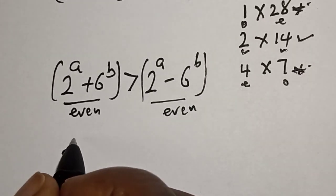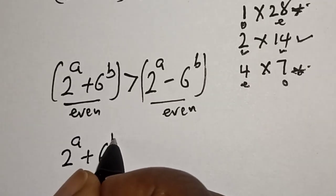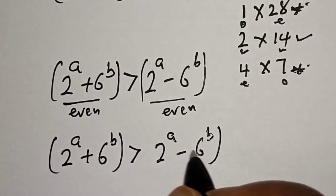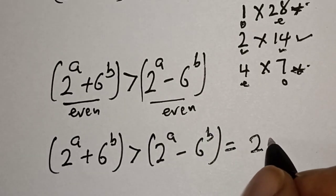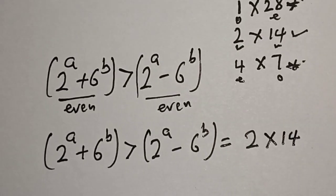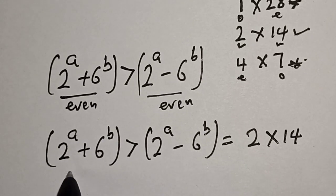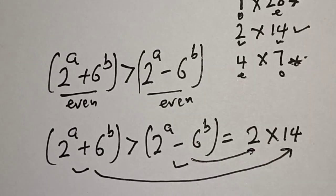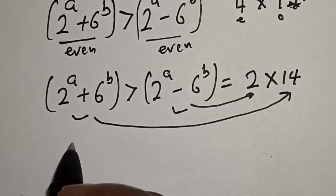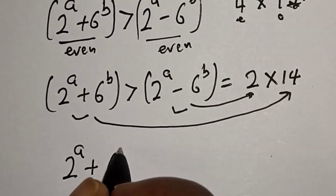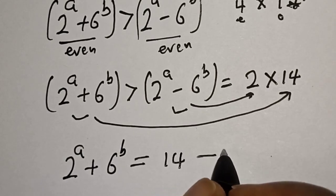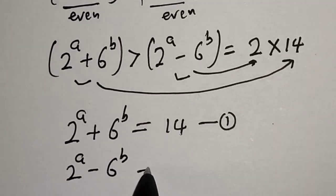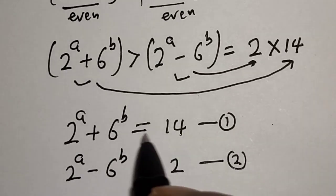Since 2 to the power of a plus 6 to the power of b is greater than 2 to the power of a minus 6 to the power of b, we compare the larger factor to the larger expression. Therefore: equation 1 is 2 to the power of a plus 6 to the power of b equals 14, and equation 2 is 2 to the power of a minus 6 to the power of b equals 2. Now let's solve the two simultaneously by elimination.